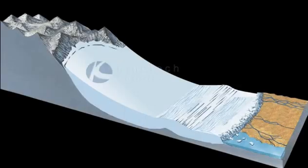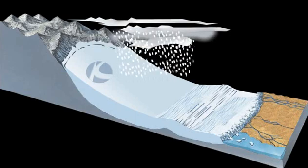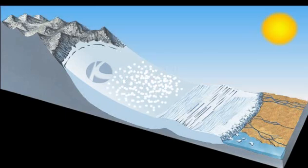Glacier formation: permanent snowfields are sustained by heavy winter snowfall and summer melting. Part of the surface snow may melt during the day.